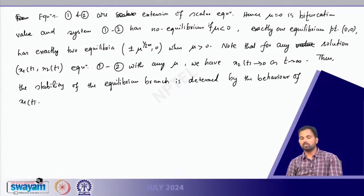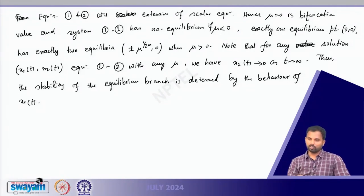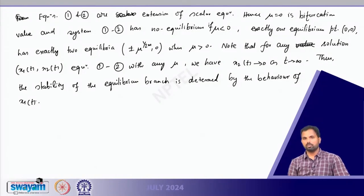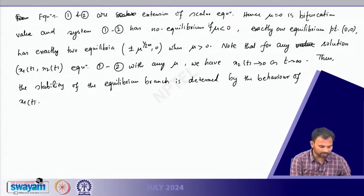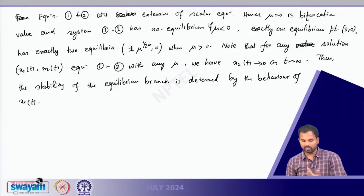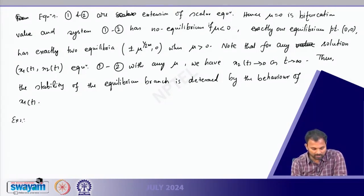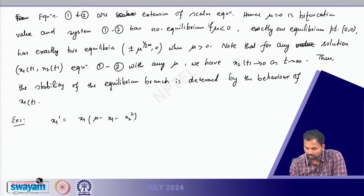So based on the properties of x1(t) we can determine the stability: if μ < 0 there is no equilibrium point; if μ > 0 there are two equilibrium points; if μ = 0 that is the bifurcation value. That is mainly determined by equation 1 rather than equation 2. Another example one can investigate is x1' = x1(μ - x1 - x2)^2 and x2' = x2(x1 - 1).